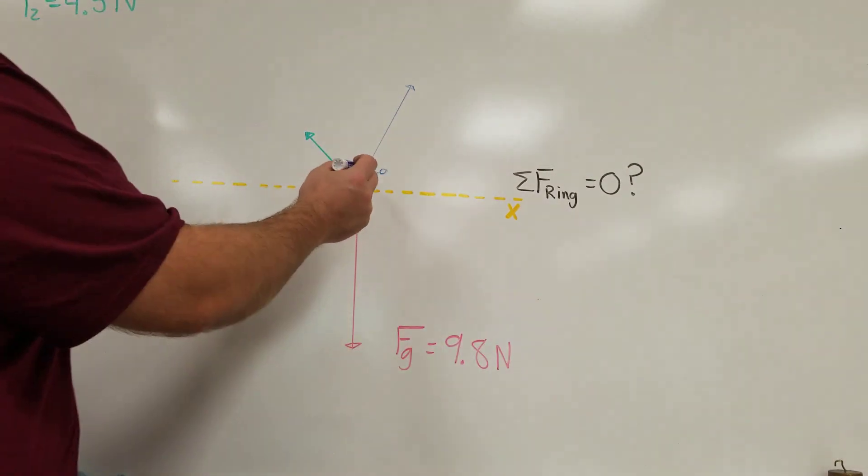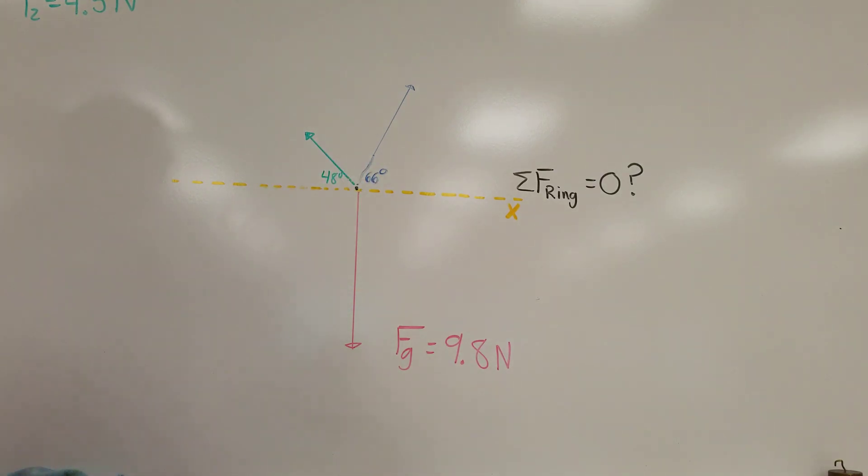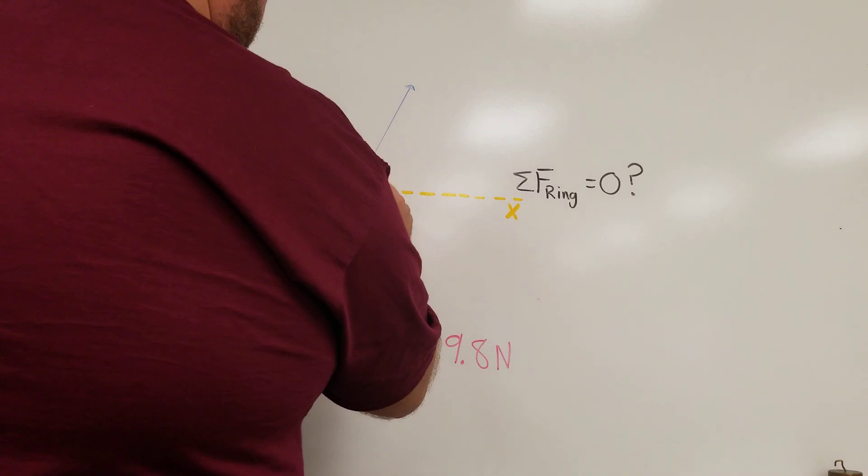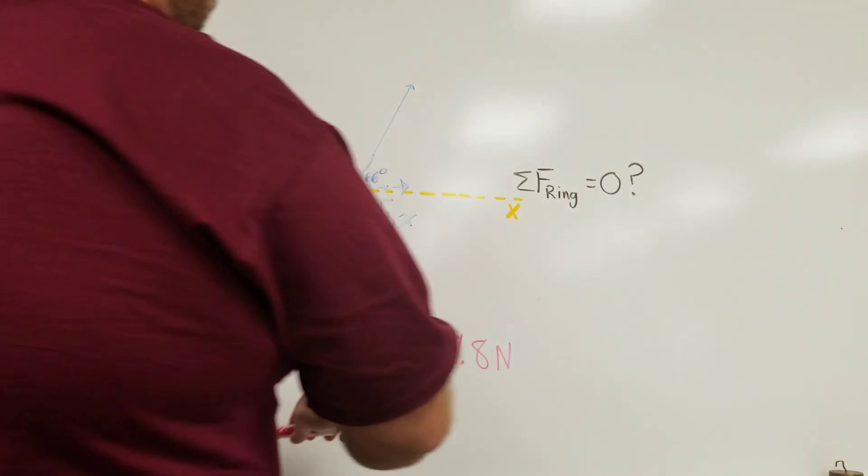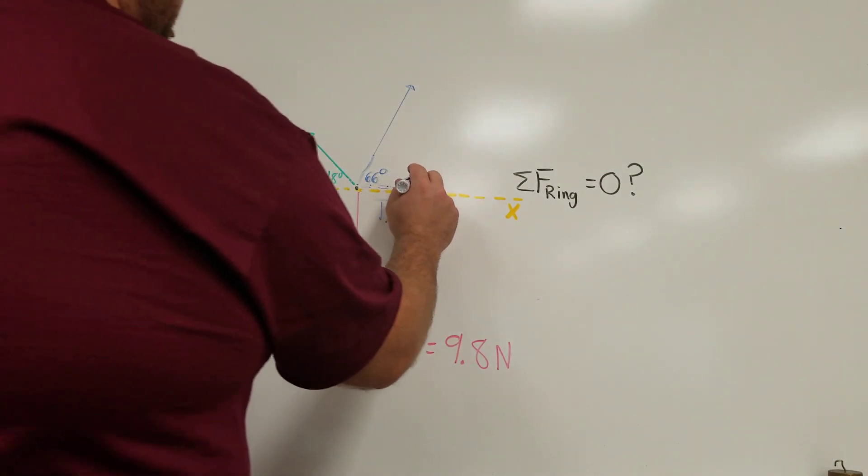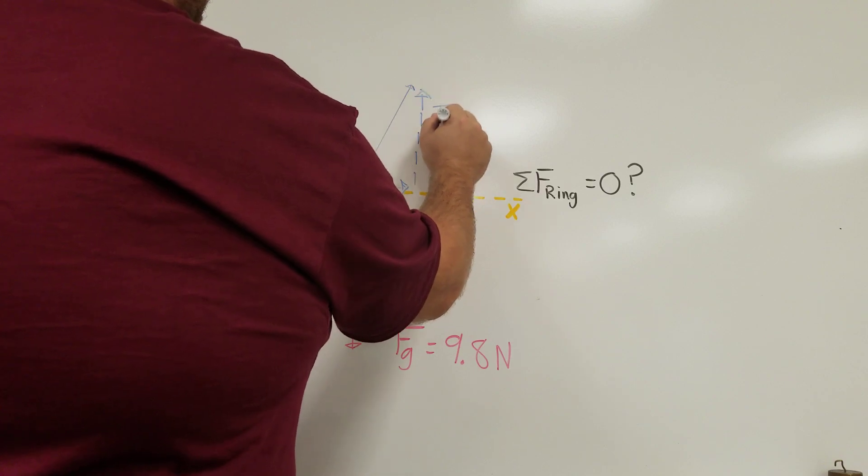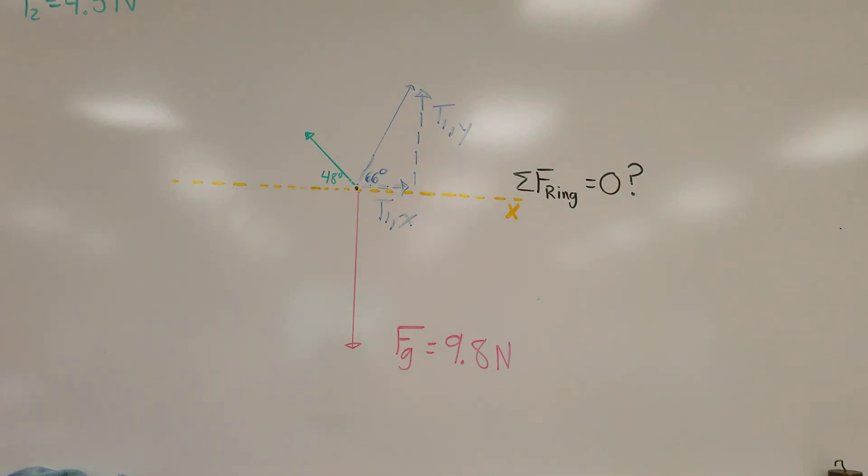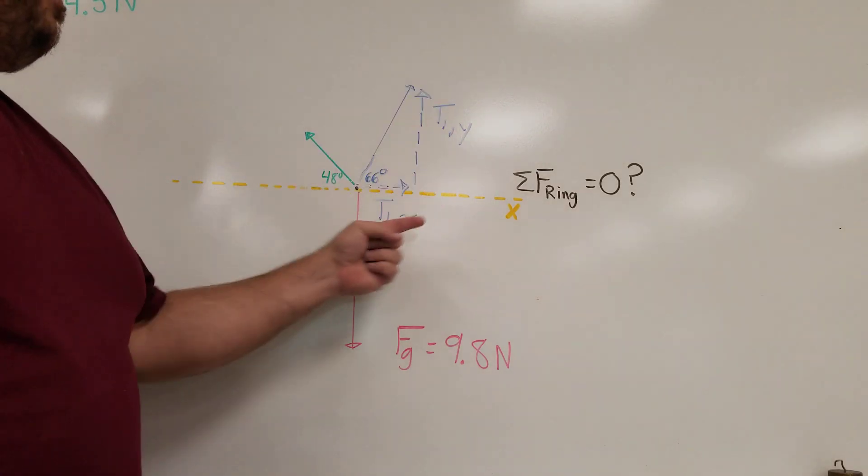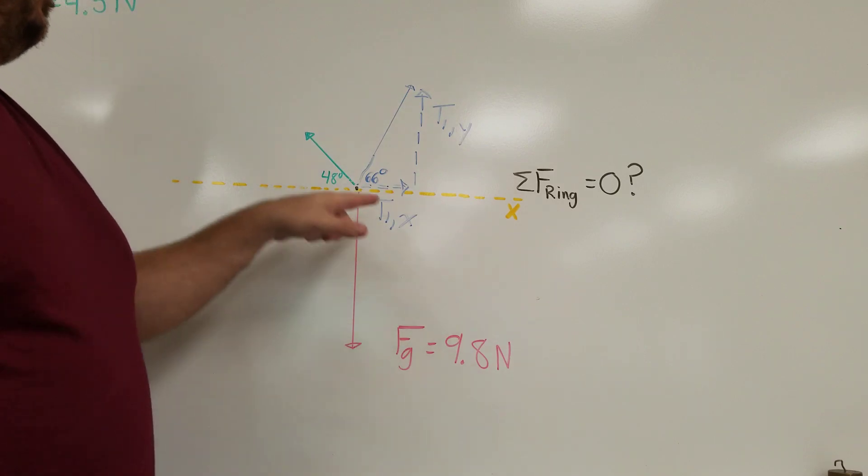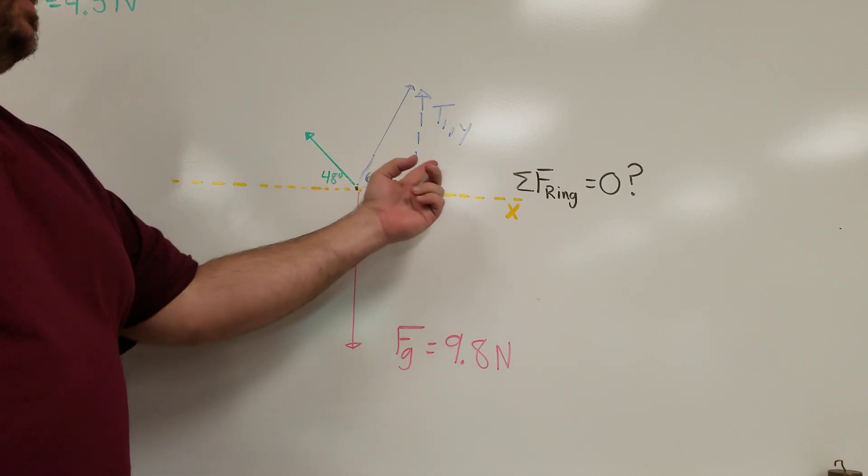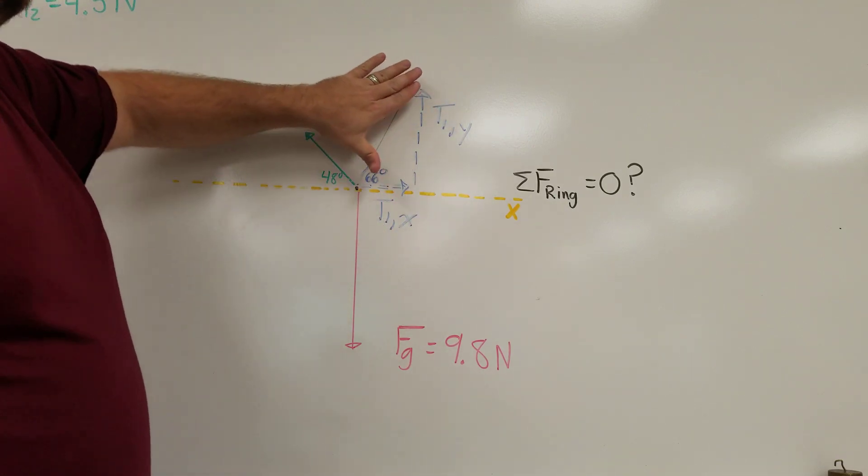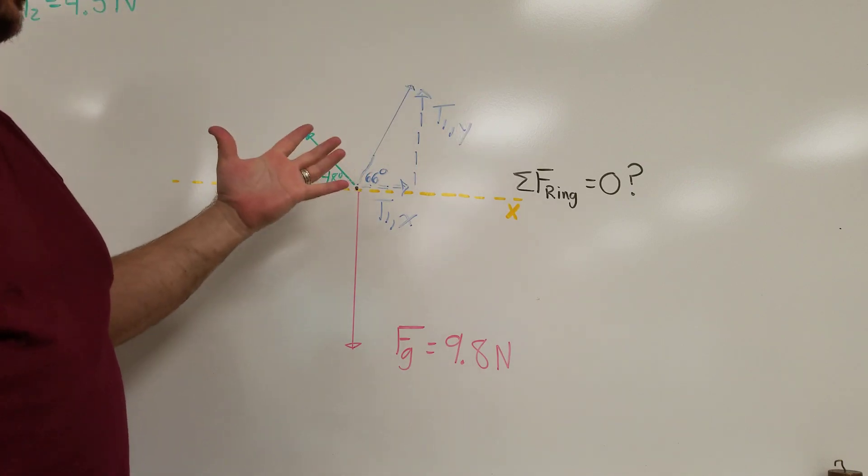Now if I have a vector that goes up into the right at a 66 degree angle I can break that up into two component vectors. I can break it up into one component that goes just to the right, which I'm going to call T1,X. And then I can add a second one that is perpendicular to that, T1,Y. So if I take that vector that goes up into the right at a 66 degree angle and I create a triangle like this with a vector going to the right and a vector going up, you start and stop at the same place. And so the solid line is equivalent to the addition of the two dash lines.